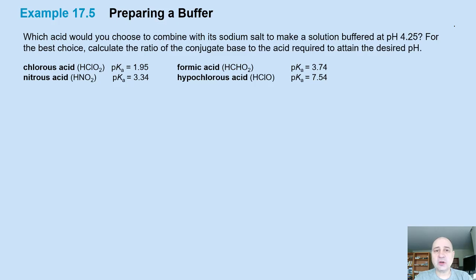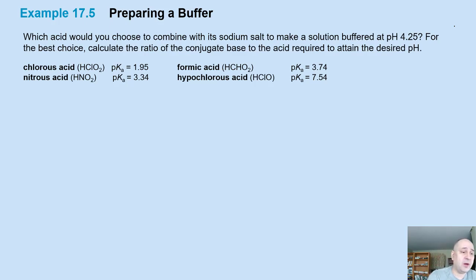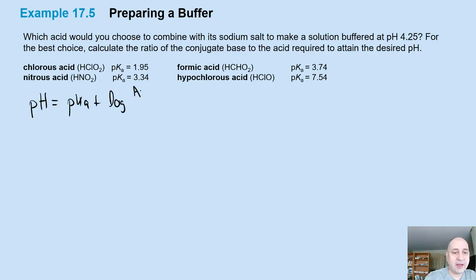So far we have determined the pH of buffers when you were given concentrations of the weak acid and its conjugate base. We've done that by either setting up ICE tables or using the Henderson-Hasselbalch equation, which, just as a reminder, states that pH is equal to the pKa plus the log of base over acid.